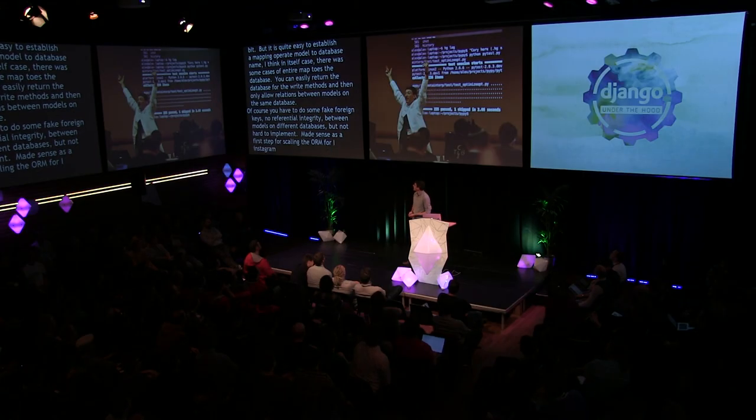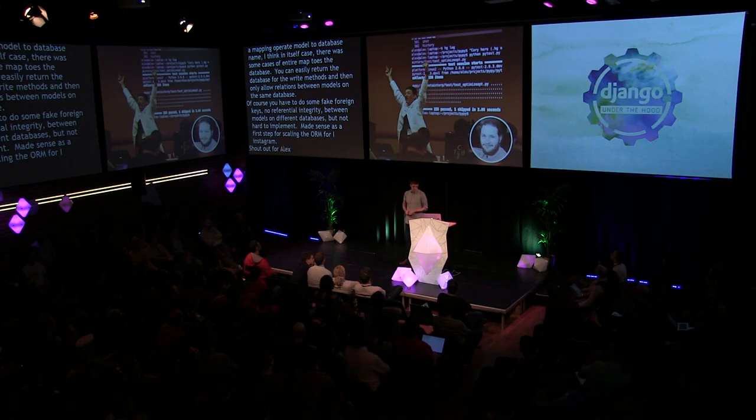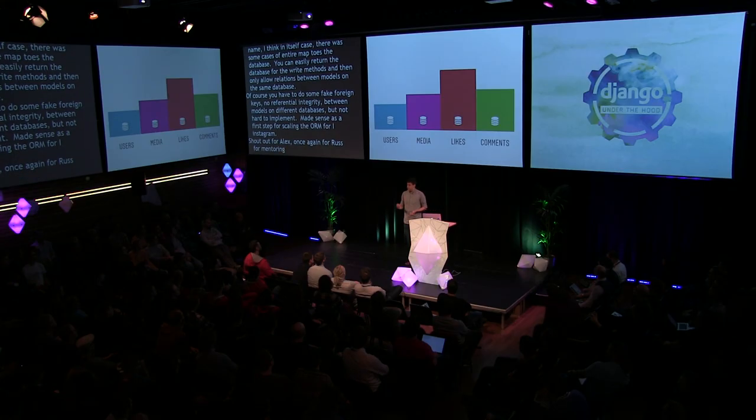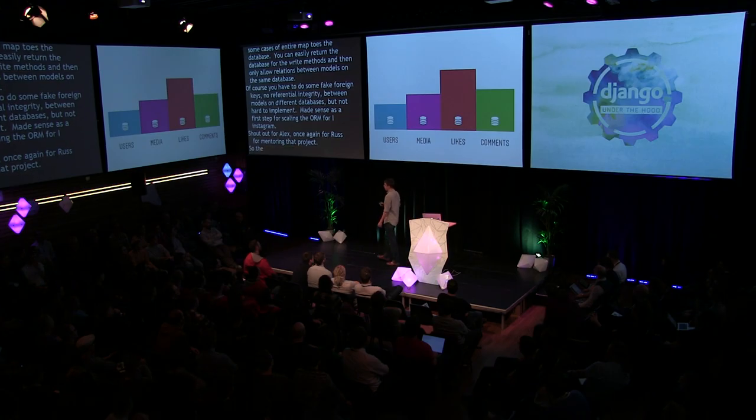Shout out to Alex Gaynor for implementing multi-DB, and once again to Russ for mentoring that project. The Django ORM was managing five million users just fine, but at a certain point it became clear that vertical partitioning wasn't going to scale — there were just too many likes to store in one database. So we picked a pretty typical horizontal sharding scheme to deal with this problem.